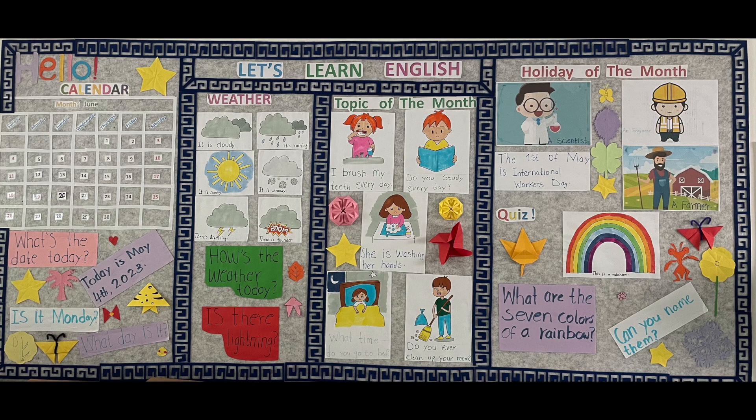The first section of this board is a calendar where you can change the month, you can change positions of the days, and the weekends and holidays are actually in red. You also have a small section where you can have simple sentences, vocabulary, or calendar-related content.